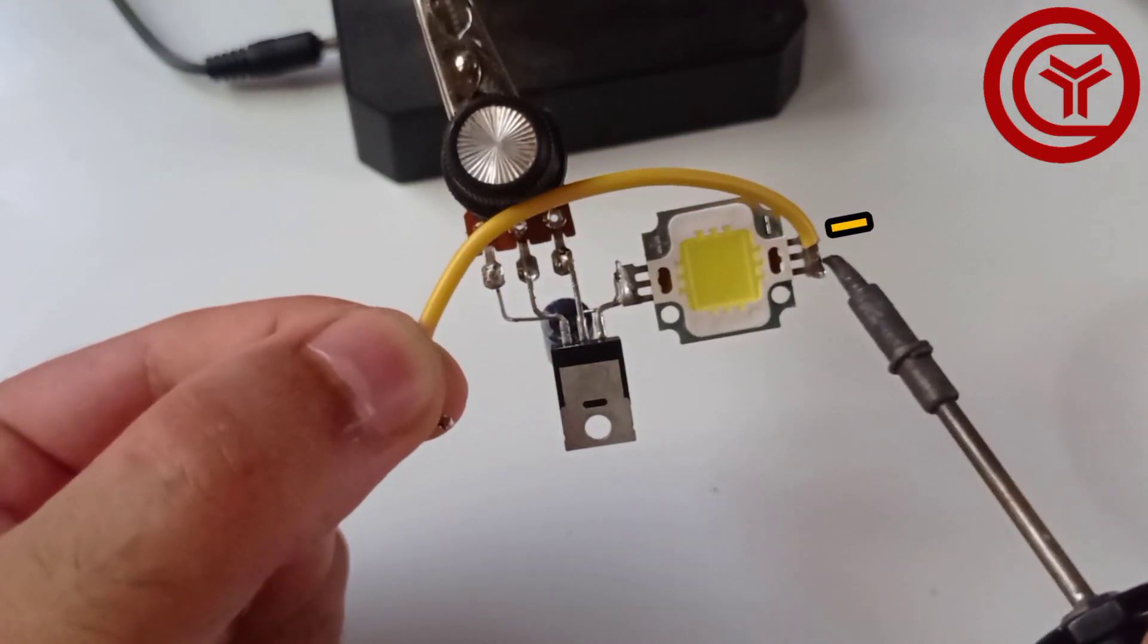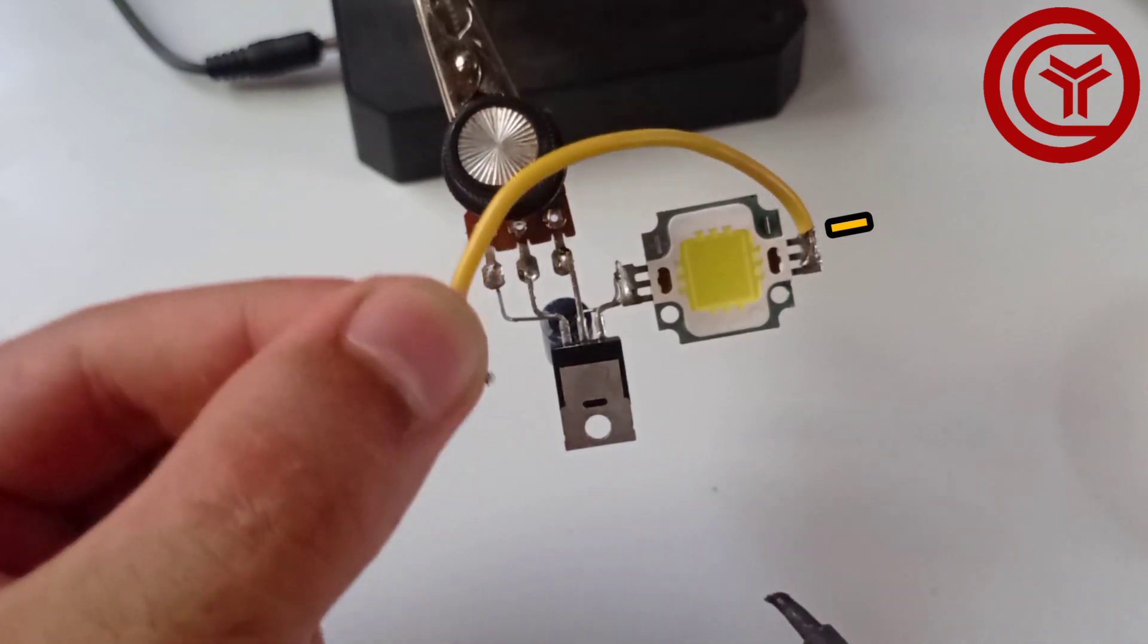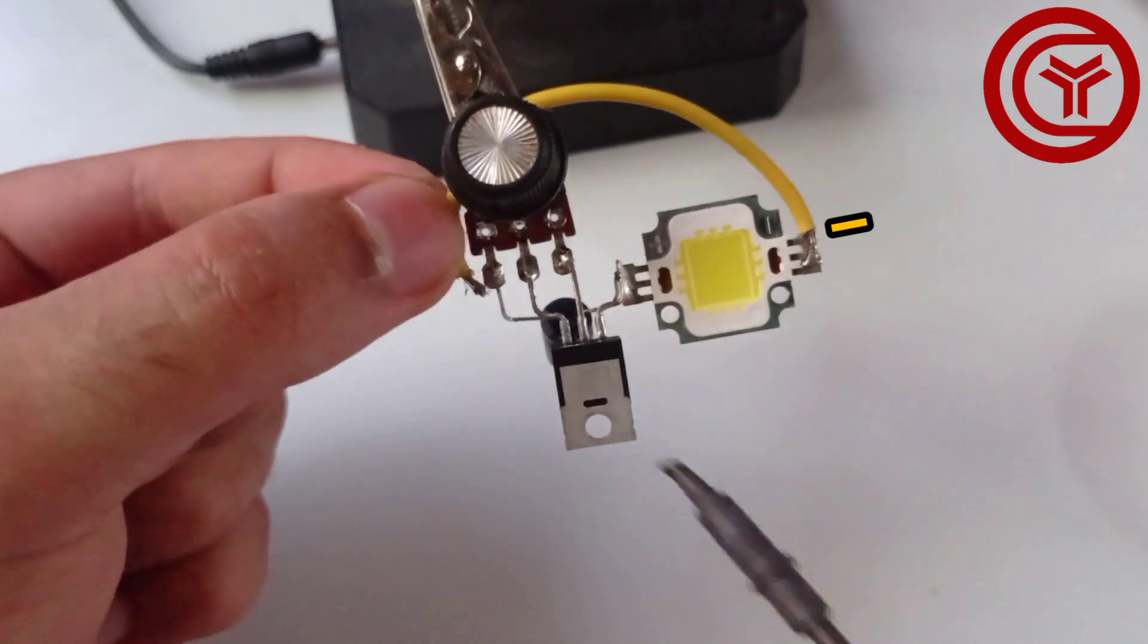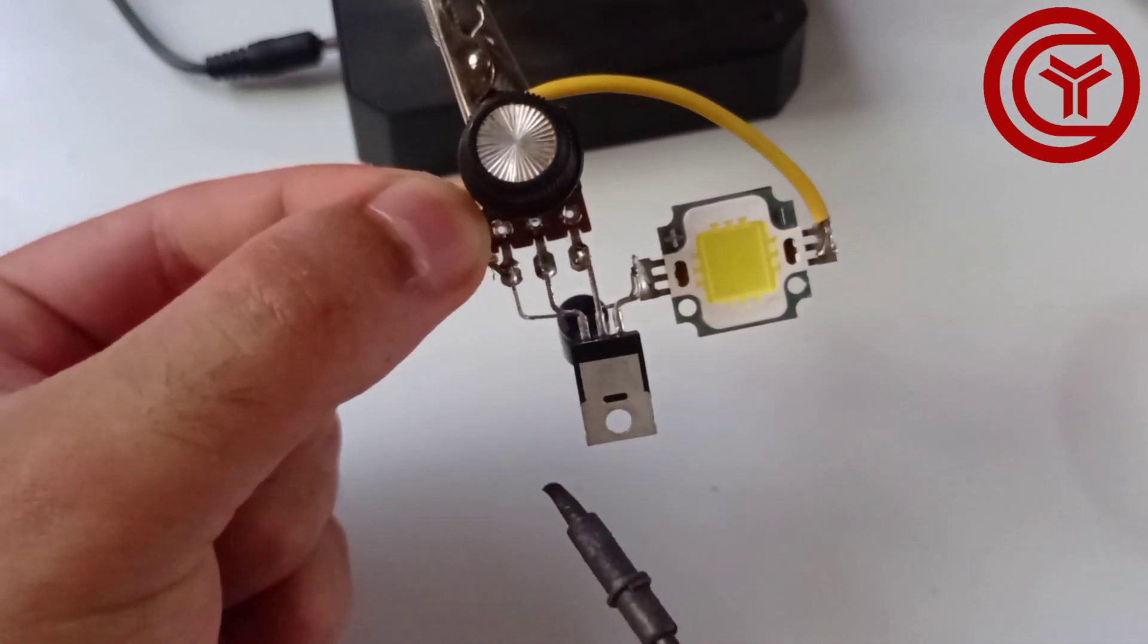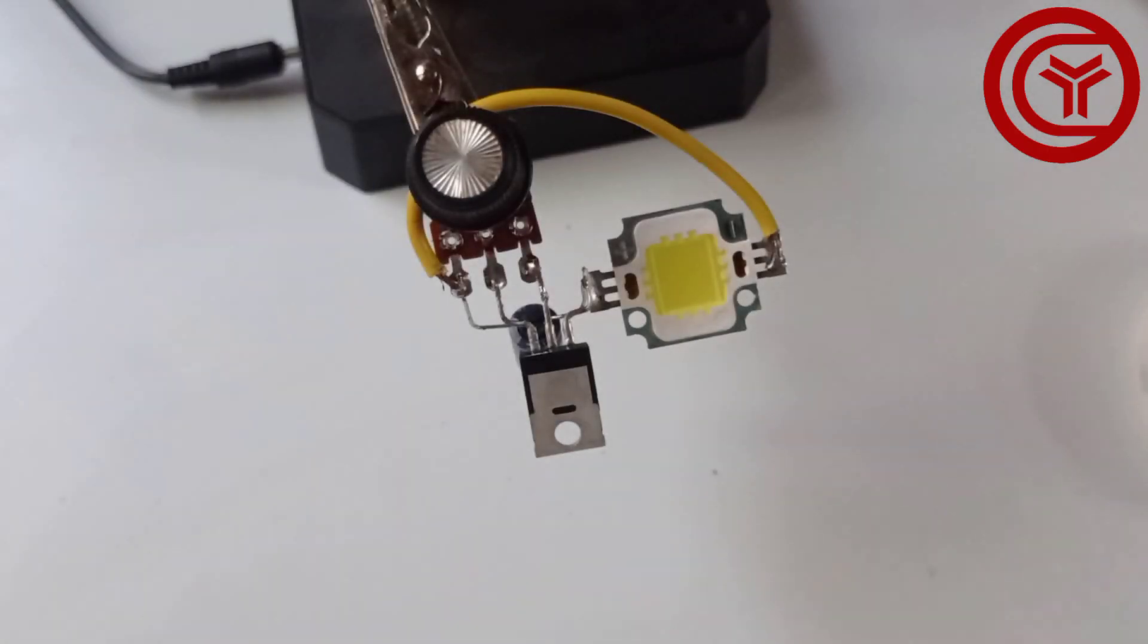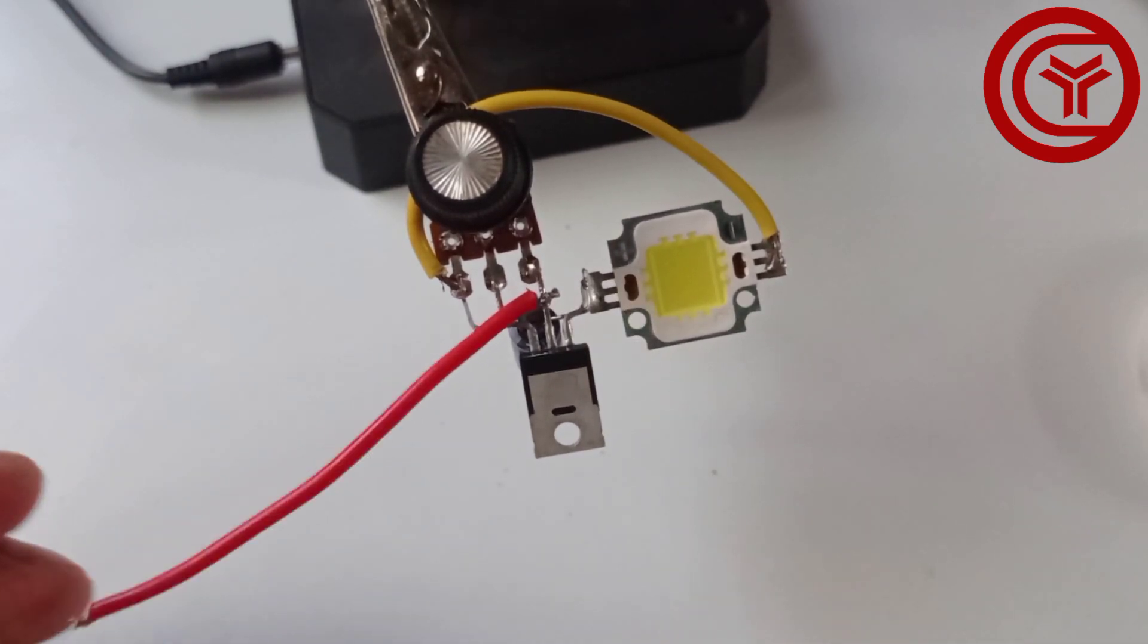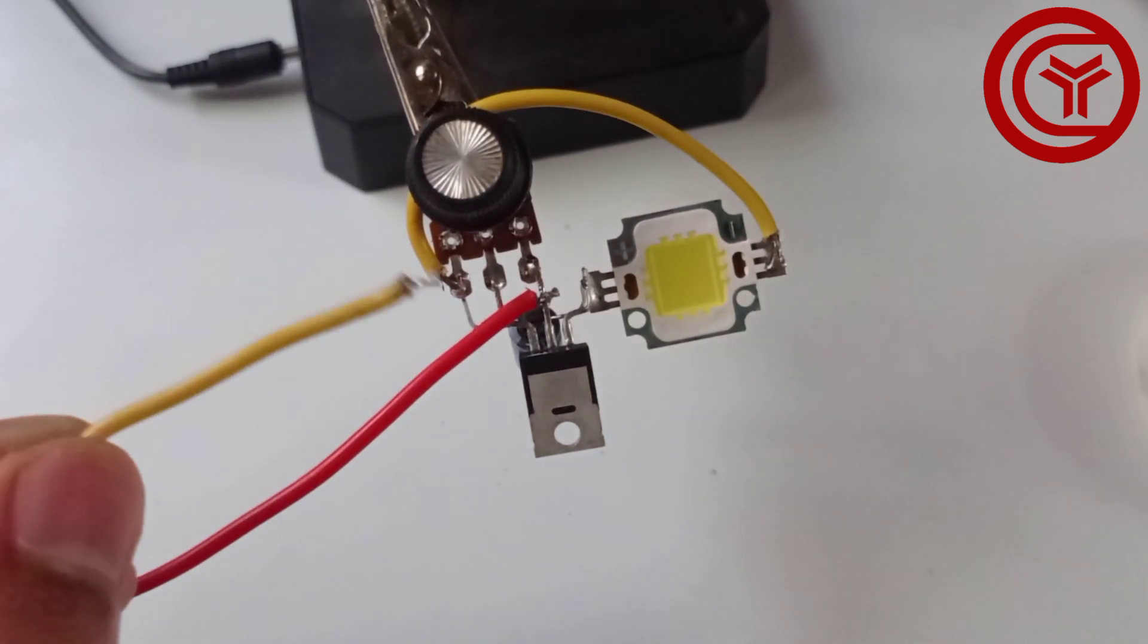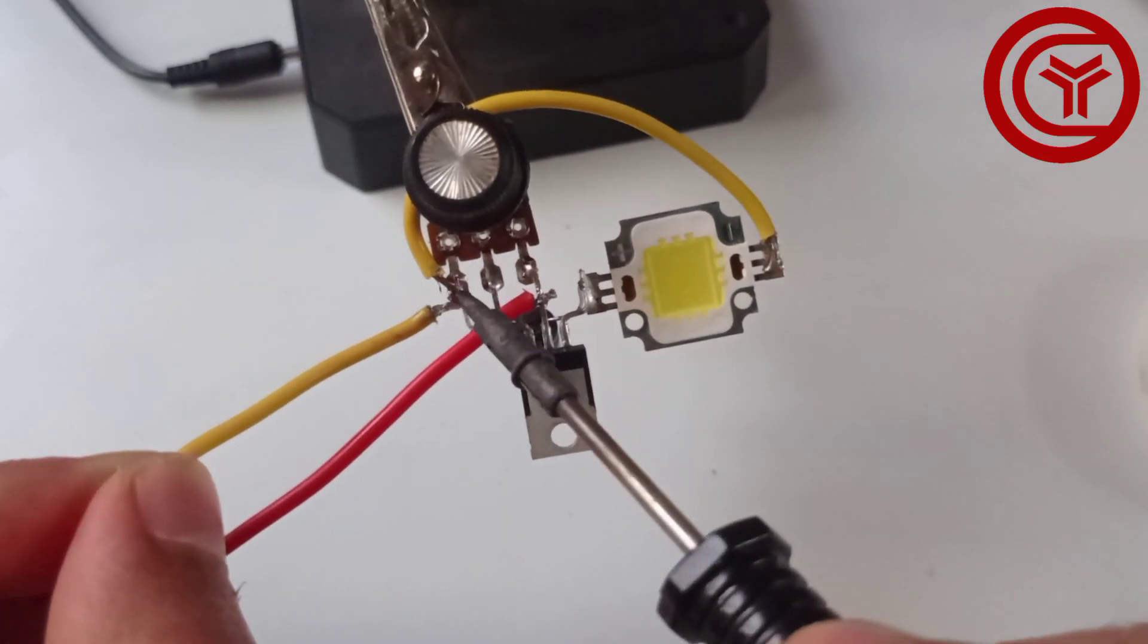Solder LED negative with pin 1 of potentiometer. Solder power positive on MOSFET drain pin. Solder power negative on pin 1 of potentiometer.